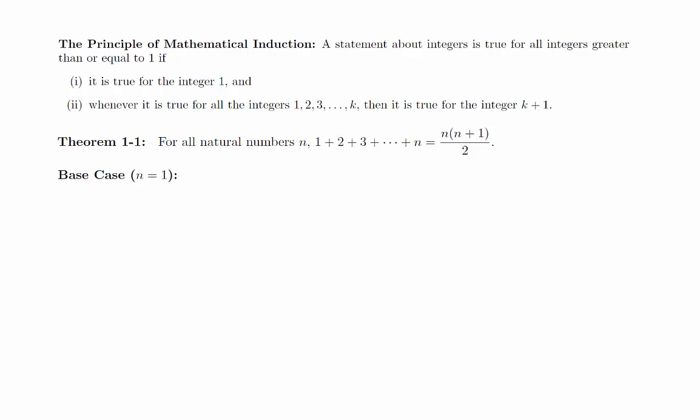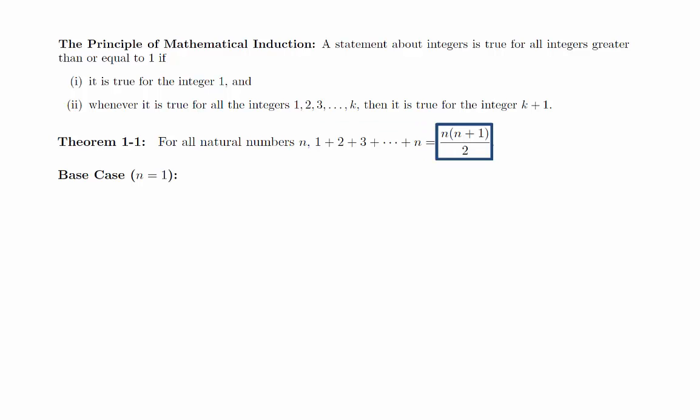Base case: when n equals 1, the sum on the left is just the number 1, and if we plug in n equals 1 on the right, we get 1 times 2 over 2, which is just 1. This proves the base case.